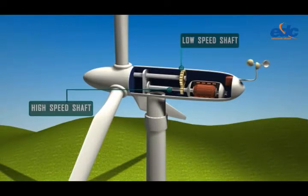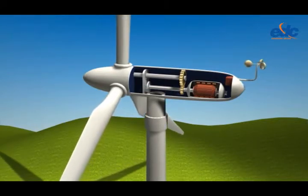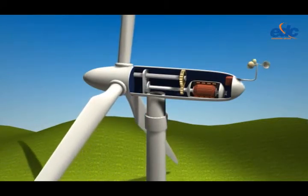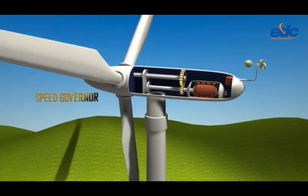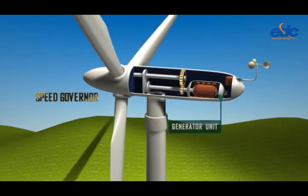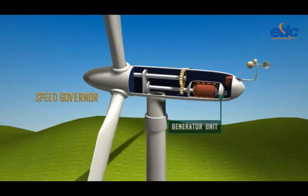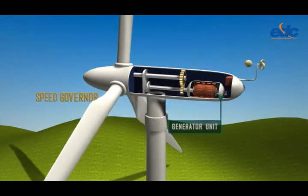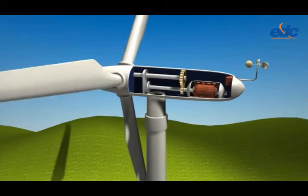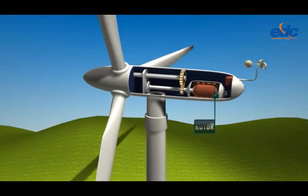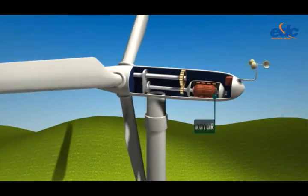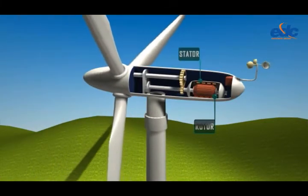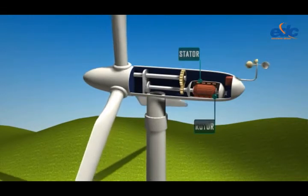The high speed shaft is rotated by the force of the wind and its speed is regulated by the speed governor. The shaft is connected to the generator unit which consists of a stator and rotor. The rotor, as you can see, is a series of magnets. The stator, which is the static part, is made up of coils of copper wire.